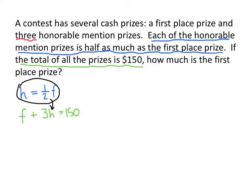So what that gives us is a new equation that looks like this. F plus three times, we're not going to call it H anymore, we're going to call it one half F, and that equals 150. And now we have what we were shooting for. We have an equation with only one variable, in this case F.